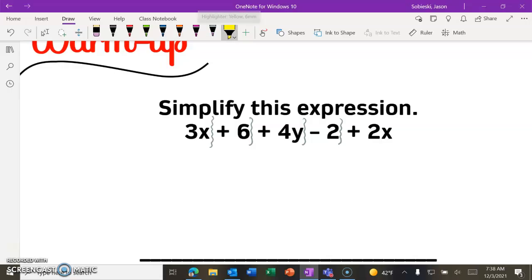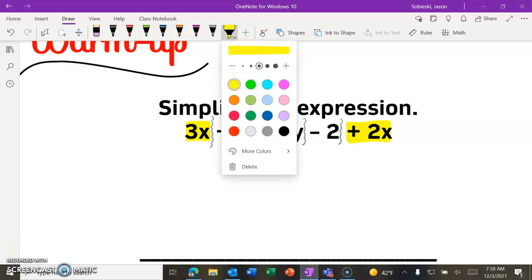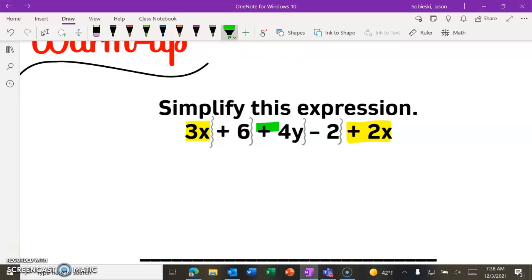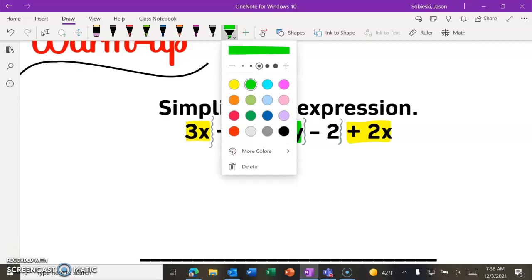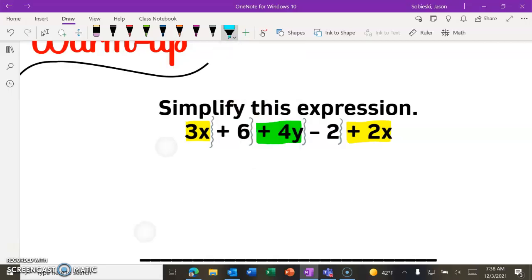So all we need to do is just start thinking about what types we have. So I see we have x terms in here, so we can highlight all of the x ones in one color. Switch to another highlighter color, and I see that we have a y term. It's only actually one y term, but we can still highlight it. And then we also have constants, which are just whole numbers.